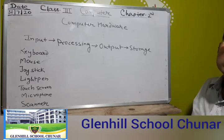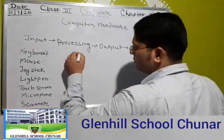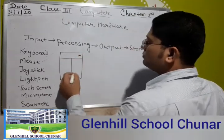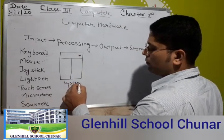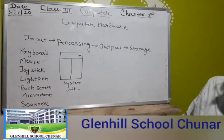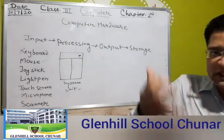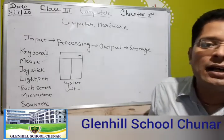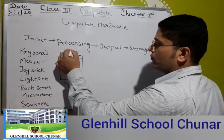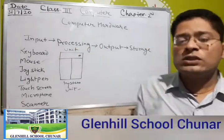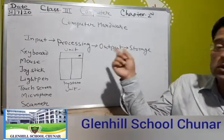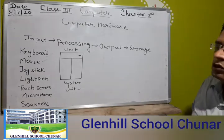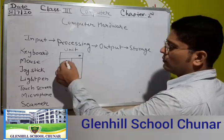Next is processing. The system unit is that box you see. In the system unit, the unit that is used to process data is called the processing unit. The processing unit of the computer is called the system unit, and its other name is CPU.